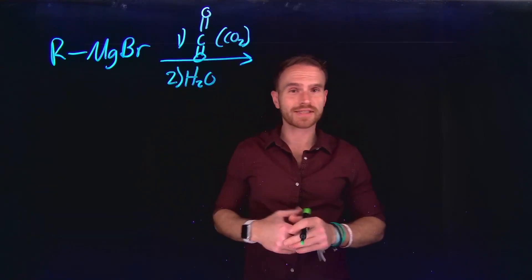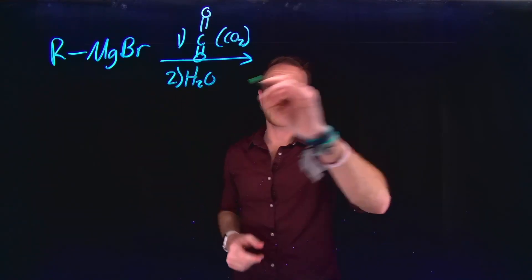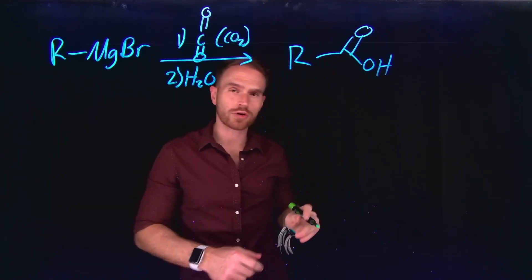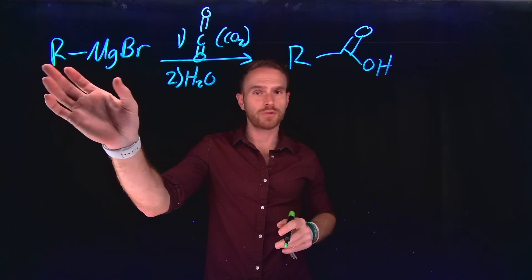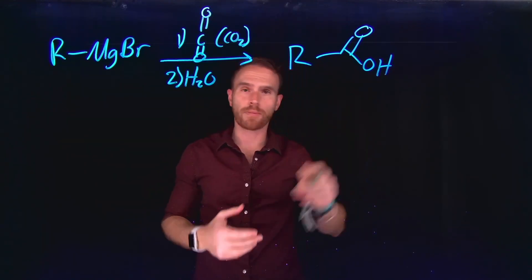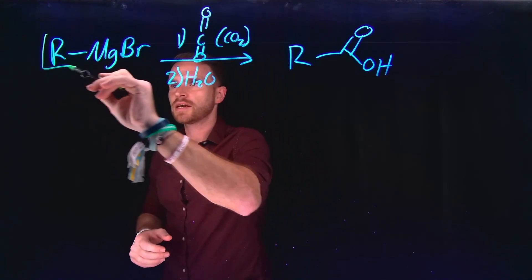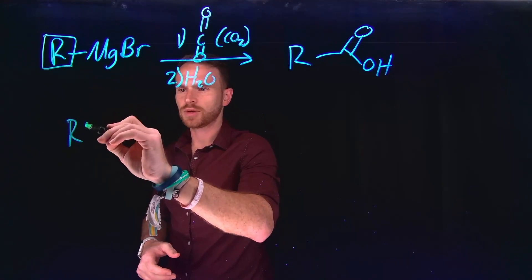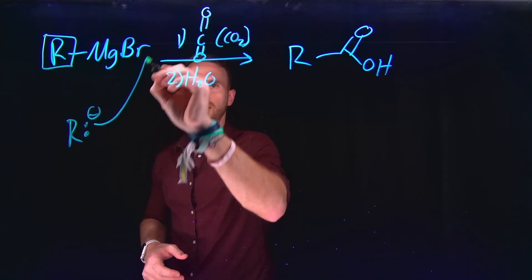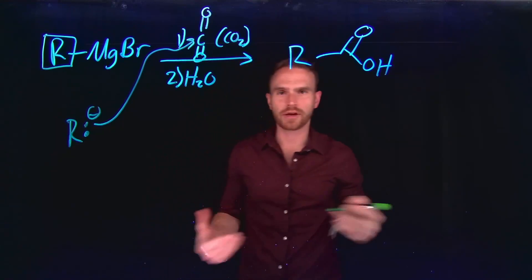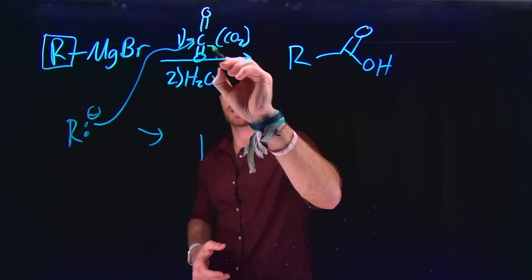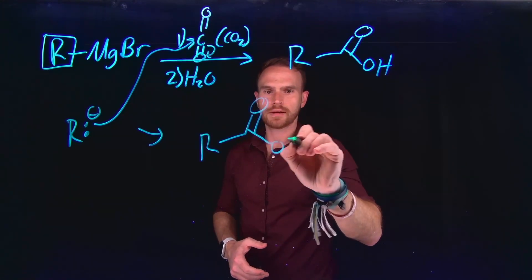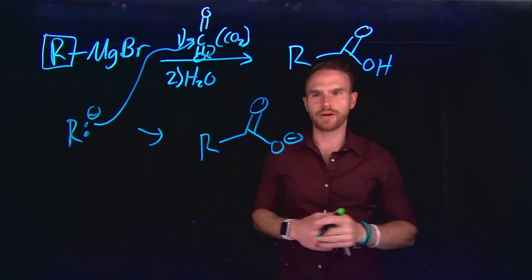We can also treat carbon dioxide (CO2) with Grignard reagents in the presence of water to form carboxylic acids. In general, the R group on a Grignard reagent acts as a carbon nucleophile — essentially a carbanion — which attacks the electrophilic carbon of CO2, forming an intermediate by kicking off the pi electrons to make an R carbonate, which is subsequently protonated by water in the reaction mixture.